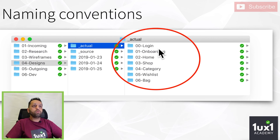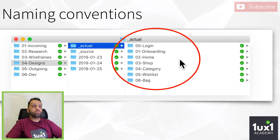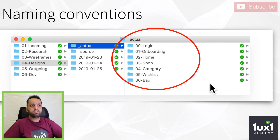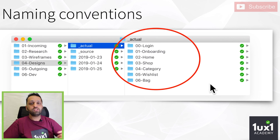It may be a wireframe you designed or a research report. So labeling folders 01, 02, 03 can be really helpful — along with exactly what the folder is for and what's in it. For example: login page, onboarding, homepage, shopping, category, checkout page. Label it in a convention that everyone can understand. Especially developers — they get quite frustrated if they're looking for a wireframe and you're not at work. It needs to be easy for them to find.